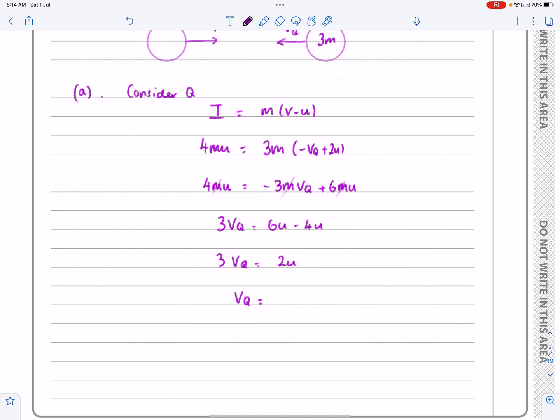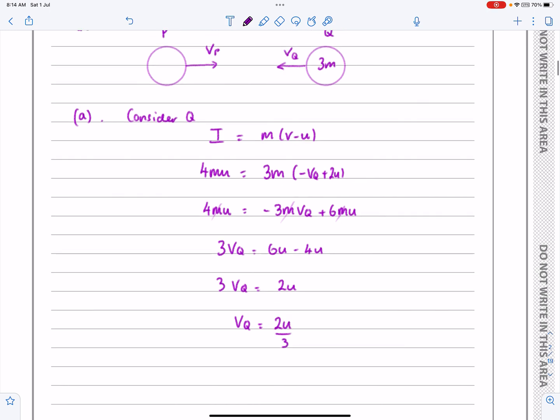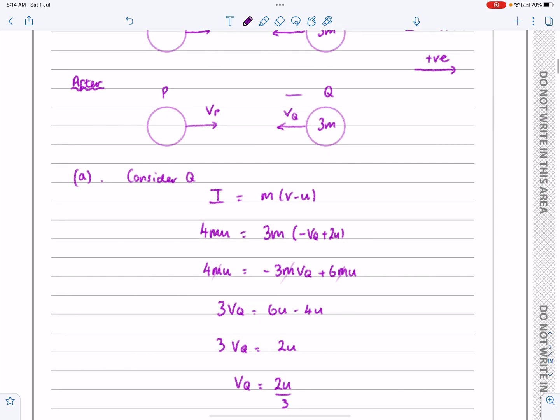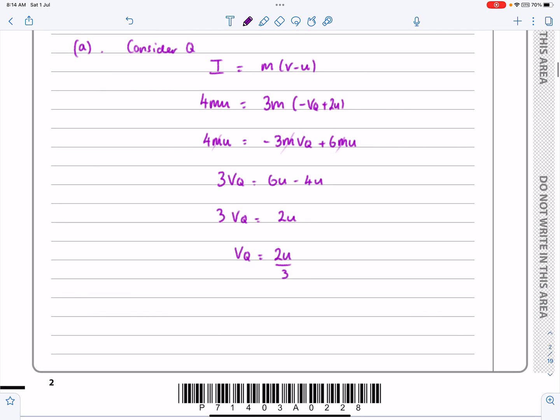but VQ then works out to be 2U over 3. And it works out to be 2U over 3, assuming that that's going in that direction now. Okay, so I've assumed that that's the situation. So V equals 2U over 3,